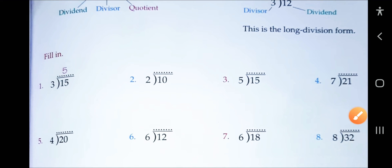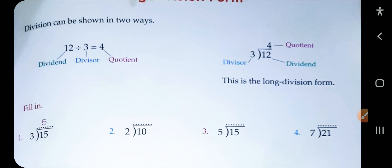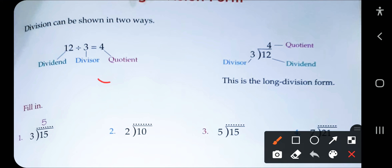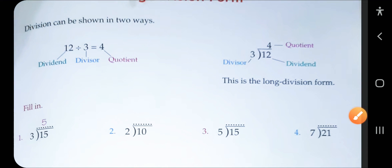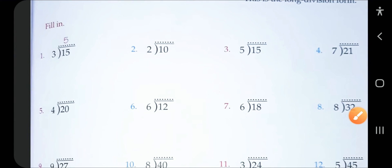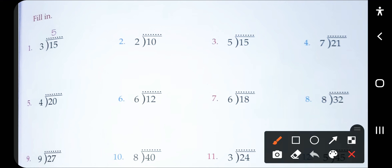Now we will start the long division form. These two methods are the short and long form. The long form is longer because we have to explain everything — if we are getting any remainder, then you have to show the remainder also. So let's start the next question, question number one — that is the long division form.